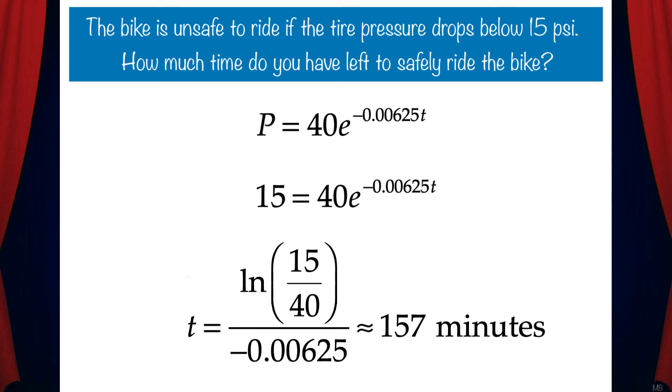Then after a bit of algebra, we get t equals ln of 15 over 40 divided by negative 0.00625, and that's approximately equal to 157 minutes.